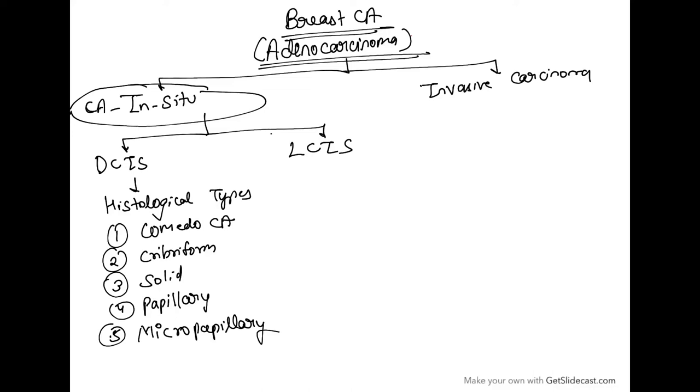Hello everyone, today we will see histopathology of breast adenocarcinoma in situ. Most breast carcinomas are adenocarcinomas and could be classified as carcinoma in situ or invasive carcinoma. The carcinoma in situ could further be classified as ductal carcinoma in situ or lobular carcinoma in situ. Ductal carcinoma in situ has few histological subtypes like comedocarcinoma, cribriform, solid, papillary, and micropapillary.